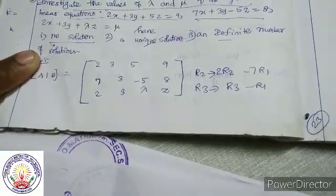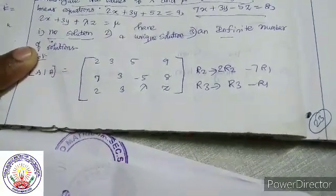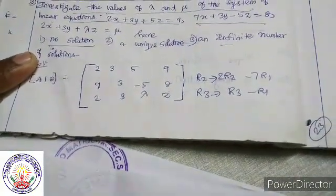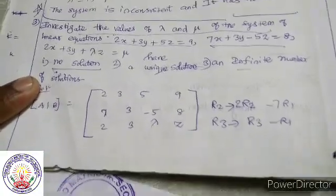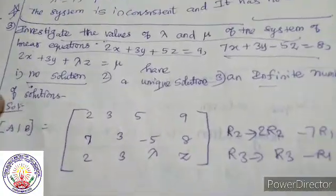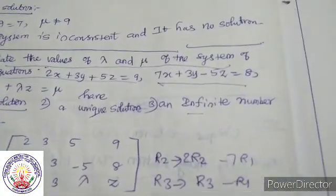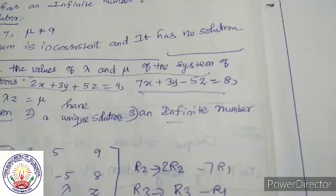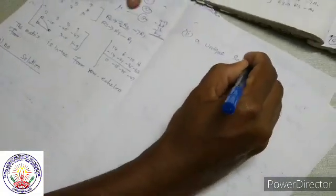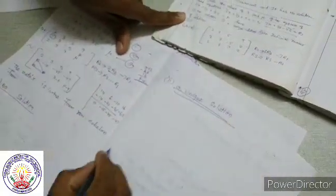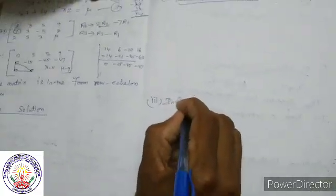From the row echelon form, we determine: number 1, no solution; number 2, unique solution; number 3, infinite number of solutions.